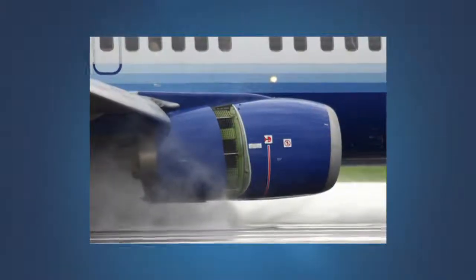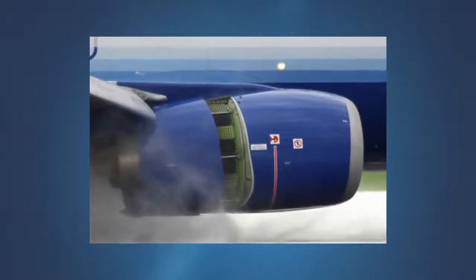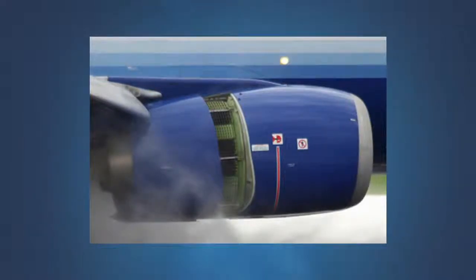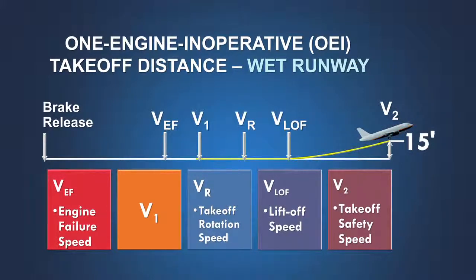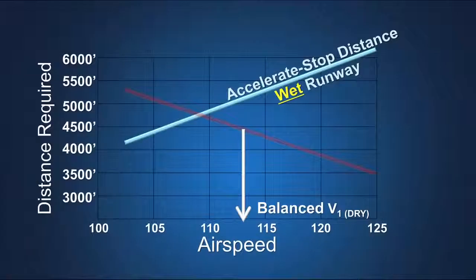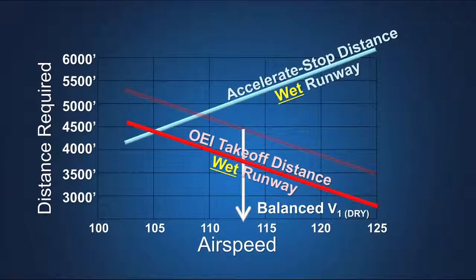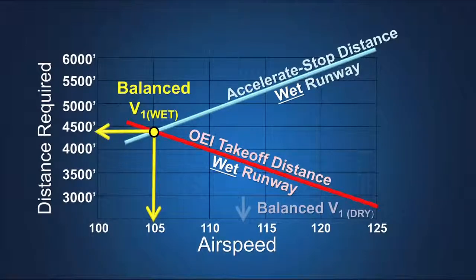The reduction in braking friction is partially offset by the stopping performance credit permitted for the use of thrust reversers on a wet runway if they are installed and operative. On a dry runway, the one engine inoperative takeoff distance ends when the airplane reaches a height of 35 feet above the runway. To reduce the V1 speed — both to rebalance the probability of rejecting a takeoff on a wet runway versus continuing, and to reduce the speed at which braking would be attempted — the regulations allow the wet one engine inoperative takeoff distance to be considered complete when the airplane reaches 15 feet rather than 35 feet. The allowance for reverse thrust credit and the use of a 15-foot screen height help engineers rebalance the takeoff field length required through the use of a lower wet runway V1 speed.